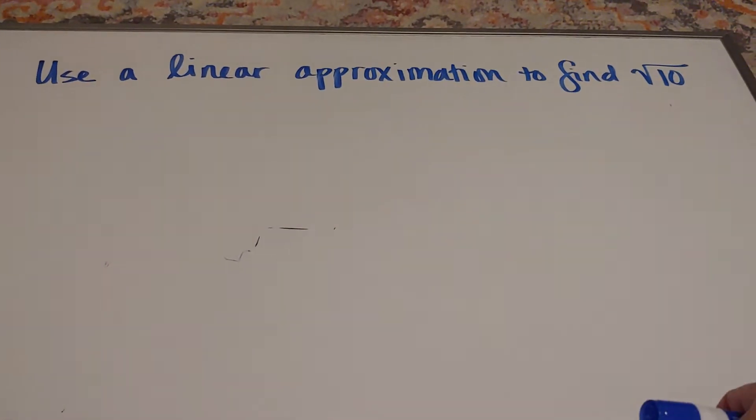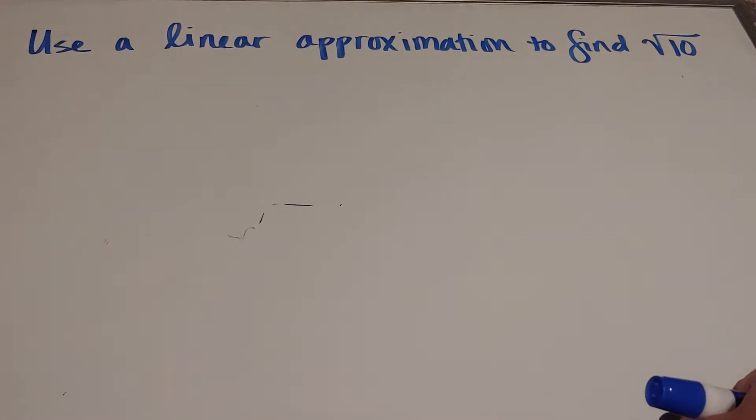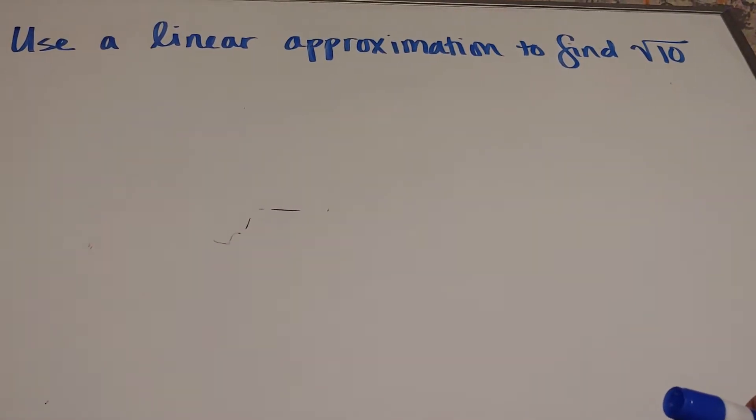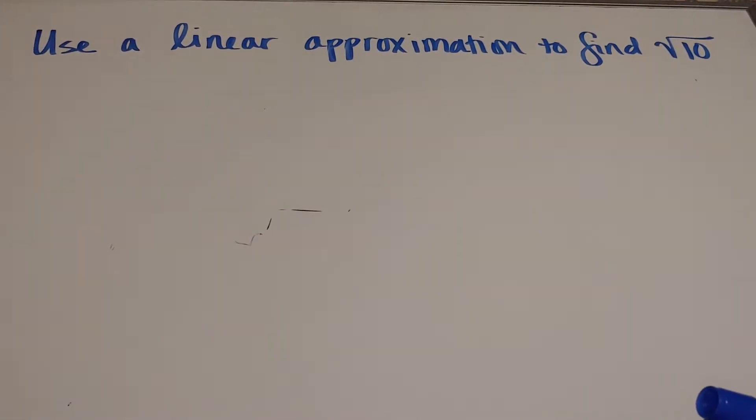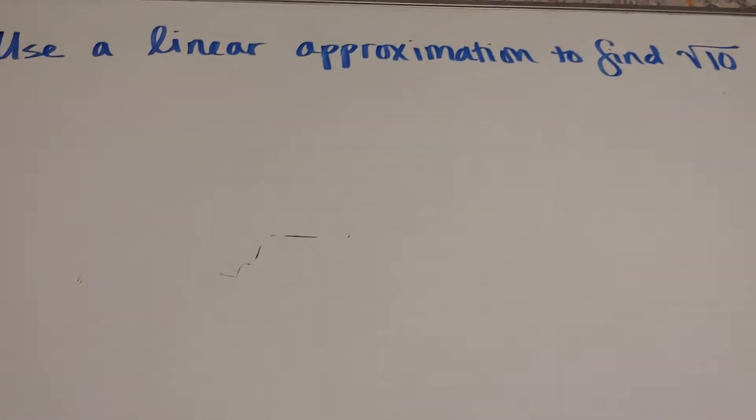In this video, we're going to look at linear approximations to find the square root of 10, but you could do it for the square root of 17, the cube root of 9, whatever you're interested in. A linear approximation is just a fancy name for a tangent line.